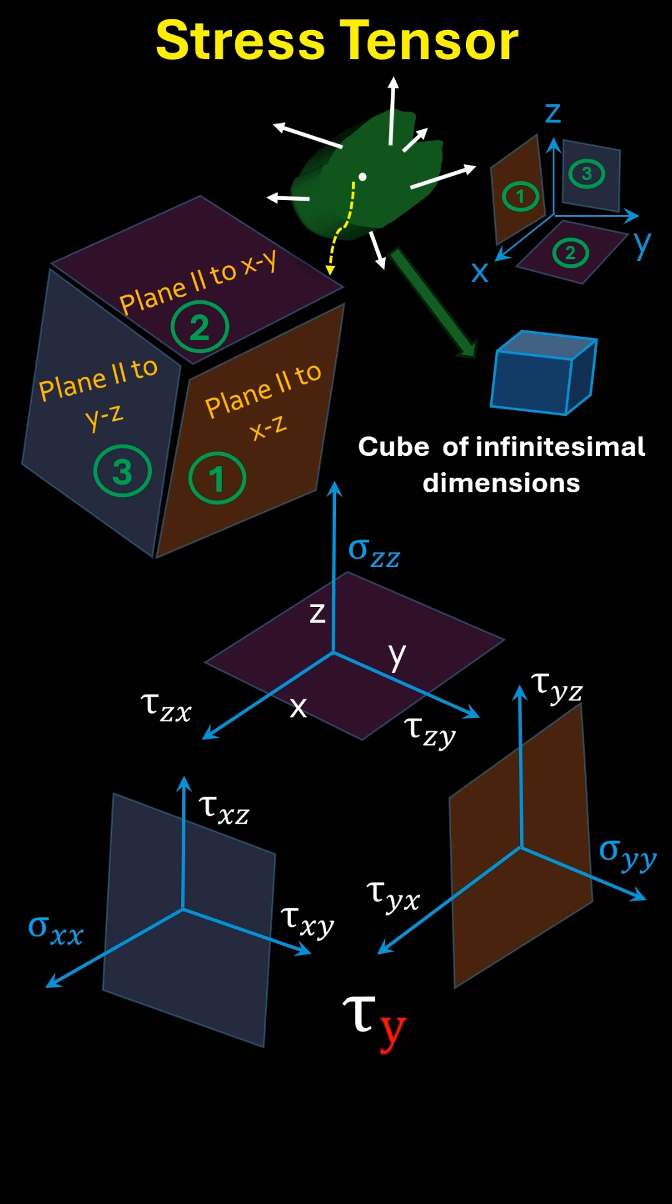Both σ and τ have two subscripts or indices. The first subscript represents the direction in which the normal to the plane is acting. The second subscript represents the direction in which the stress component is acting.